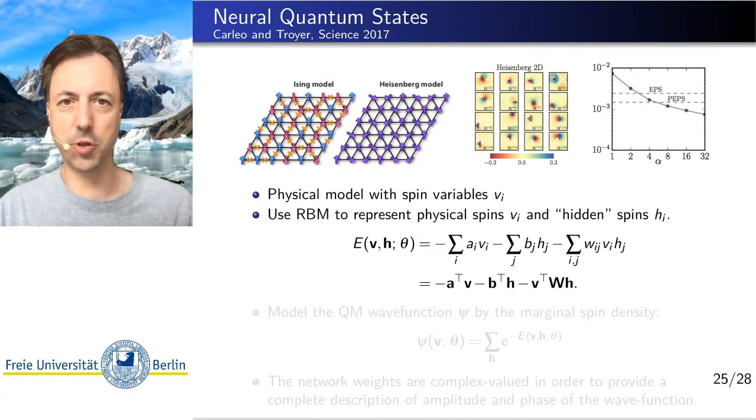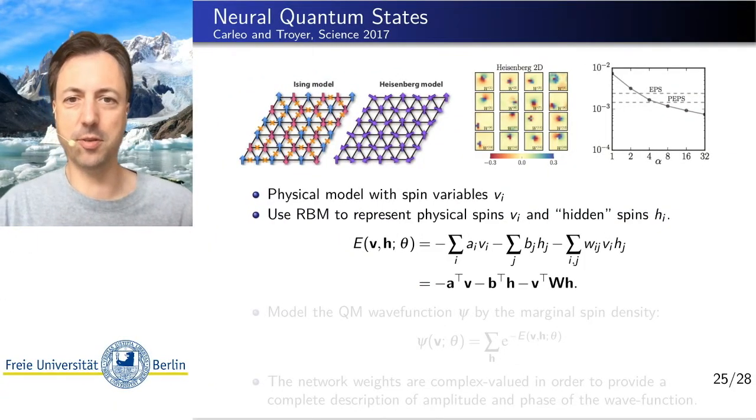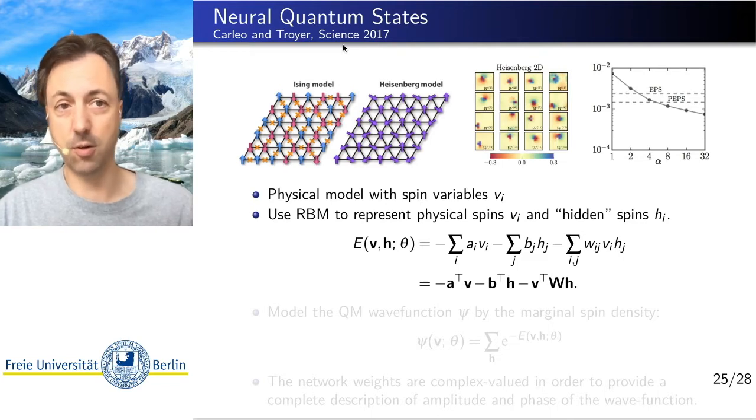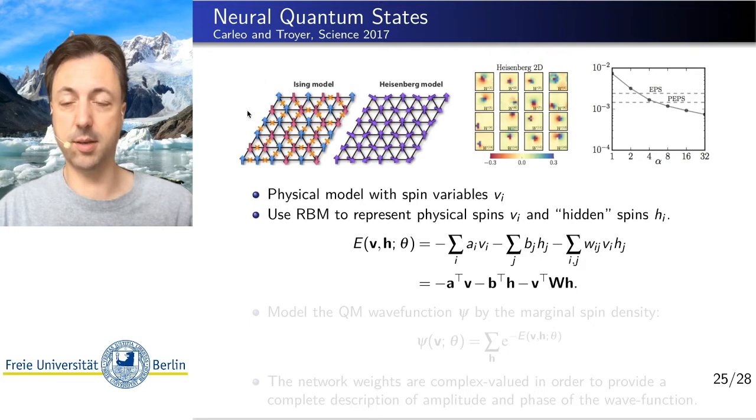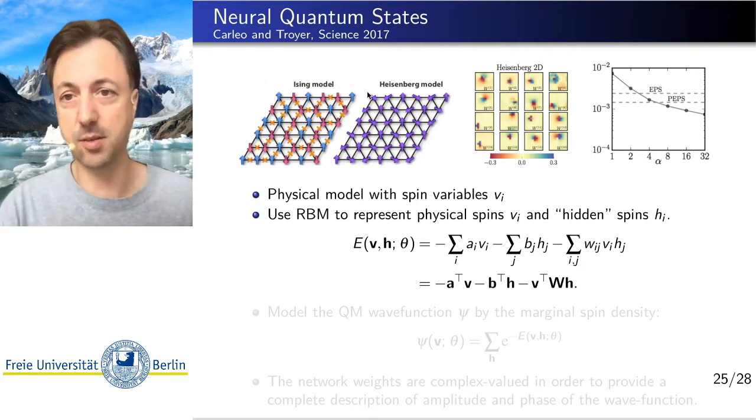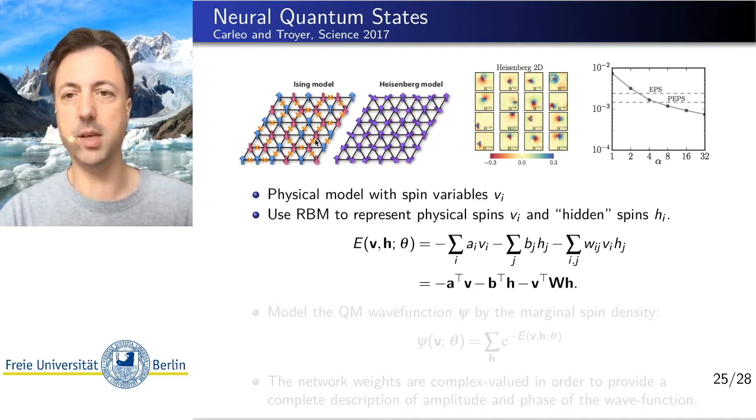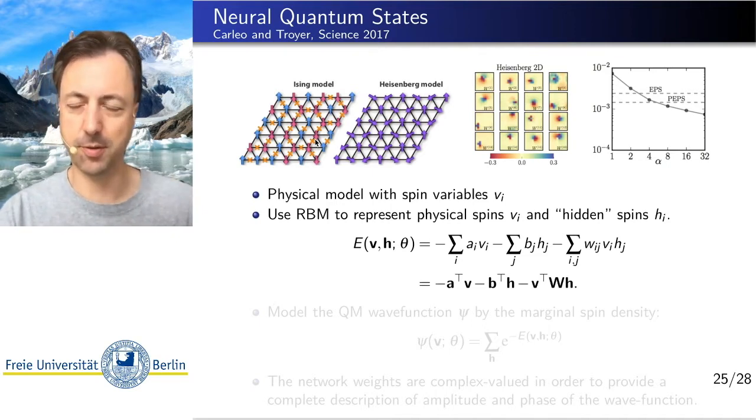In the end I want to show you an application of restricted Boltzmann machines to physics, specifically to quantum physics. This is a paper on so-called neural quantum states by Giuseppe Carleo and Matthias Troyer from 2017, a very famous paper. Basically what they do is they want to solve quantum systems, specifically lattice systems with quantum spins that are interacting with each other.